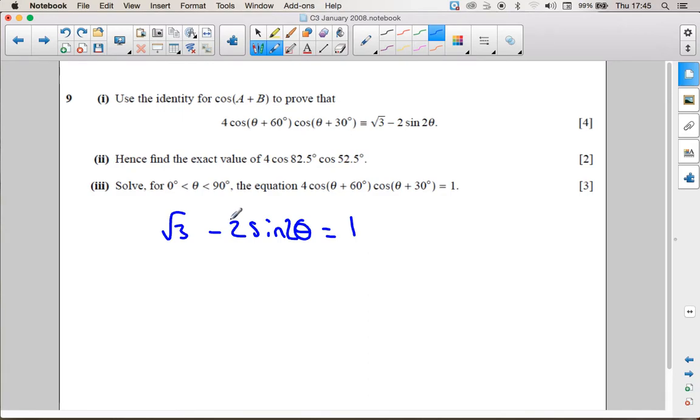Well, if I add 2 sin 2 theta to the right hand side and then take away 1, we're going to get that 2 sin 2 theta is equal to root 3 take away 1.